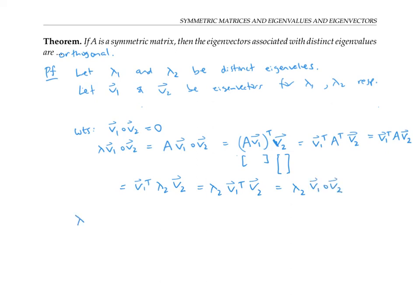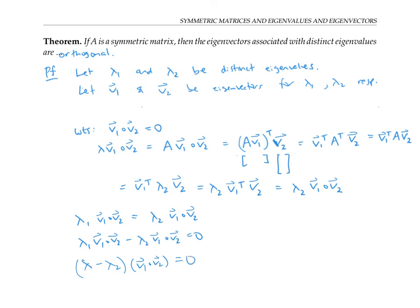Therefore, lambda one times v₁ dot v₂ equals lambda two times v₁ dot v₂. Pulling everything to the left side and factoring out v₁ dot v₂, we get that lambda one minus lambda two is not zero since lambda one and lambda two are distinct. Therefore, v₁ dot v₂ must also be zero.